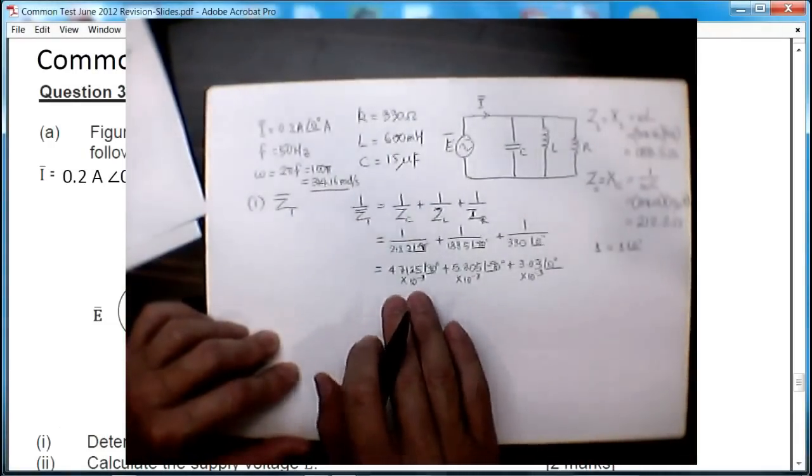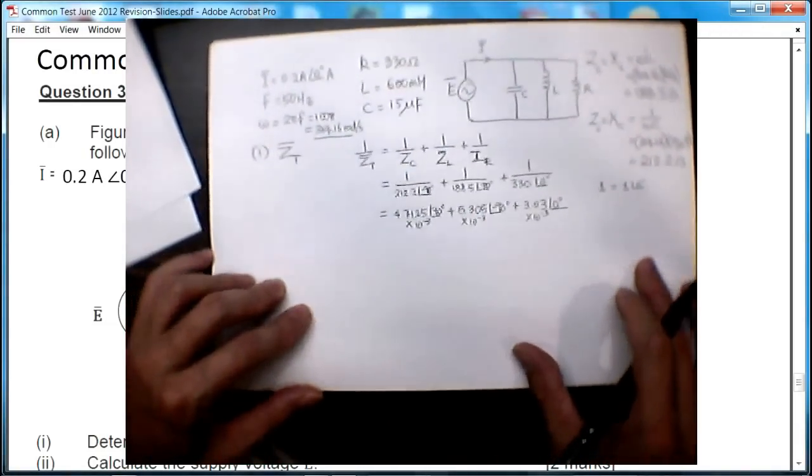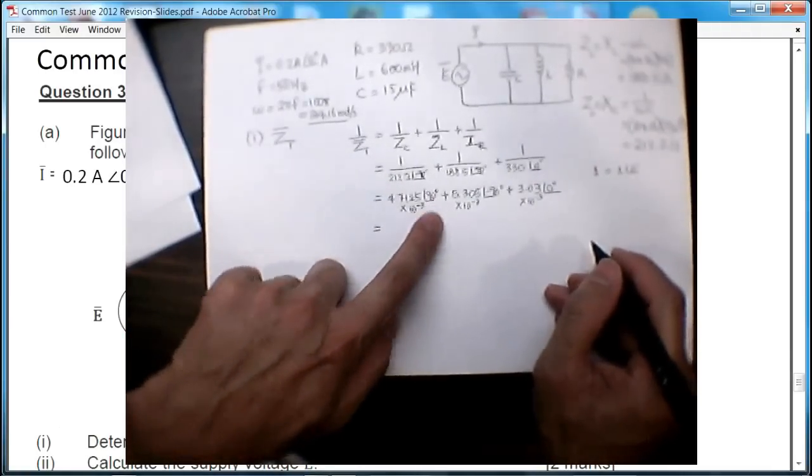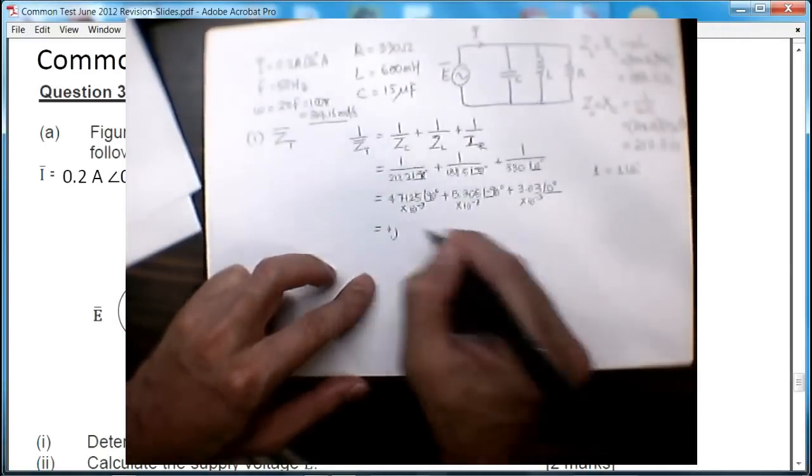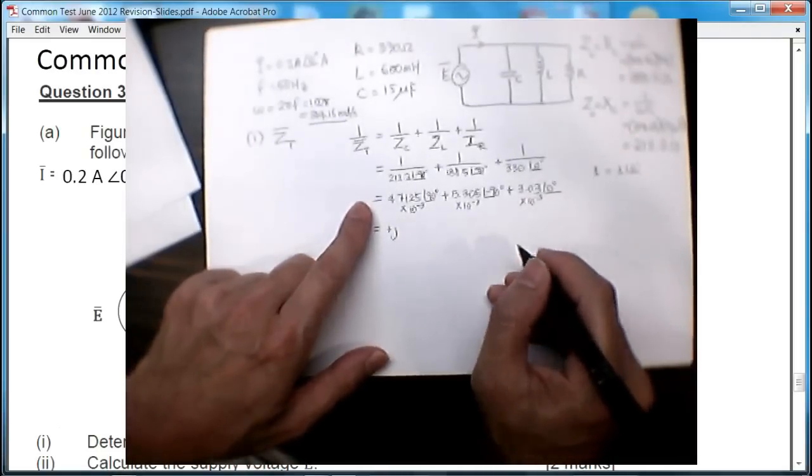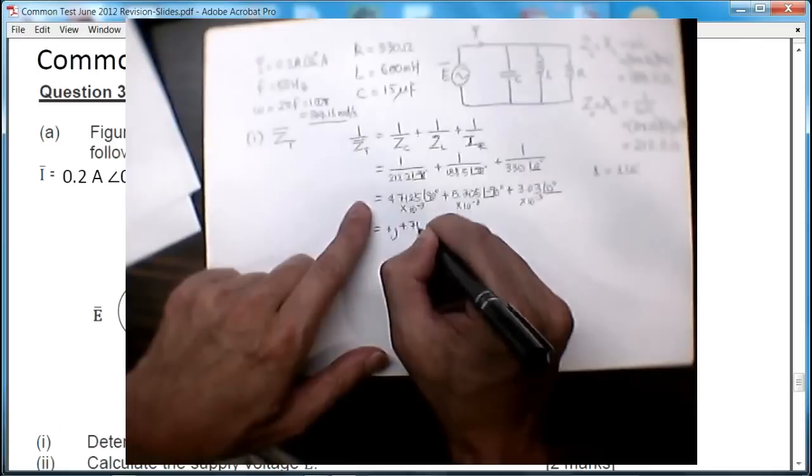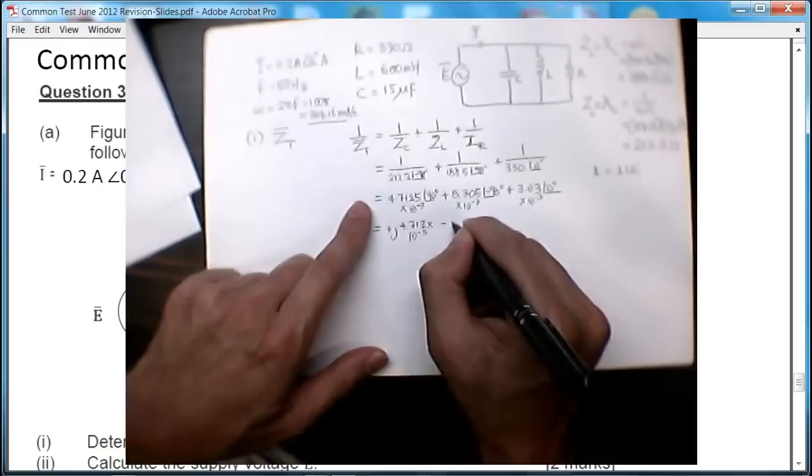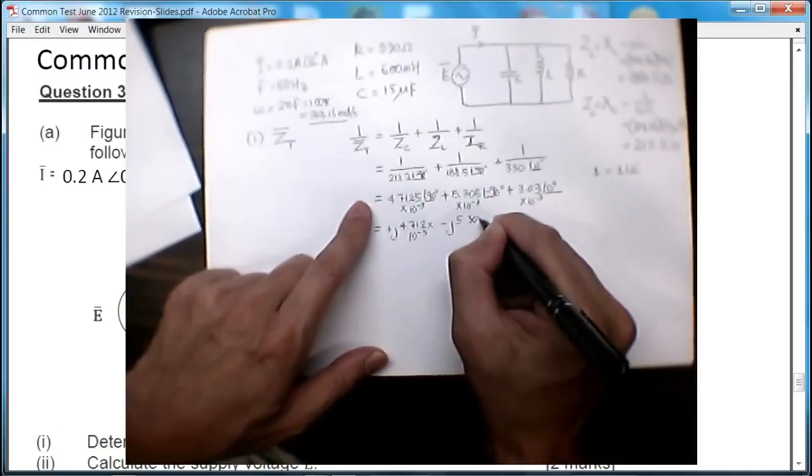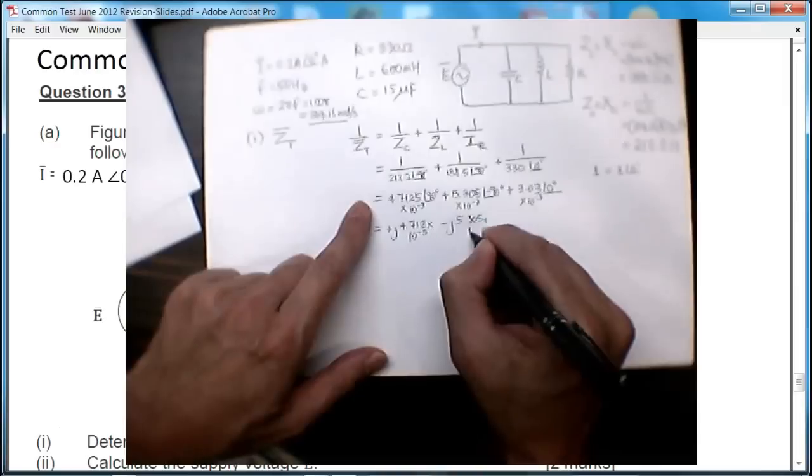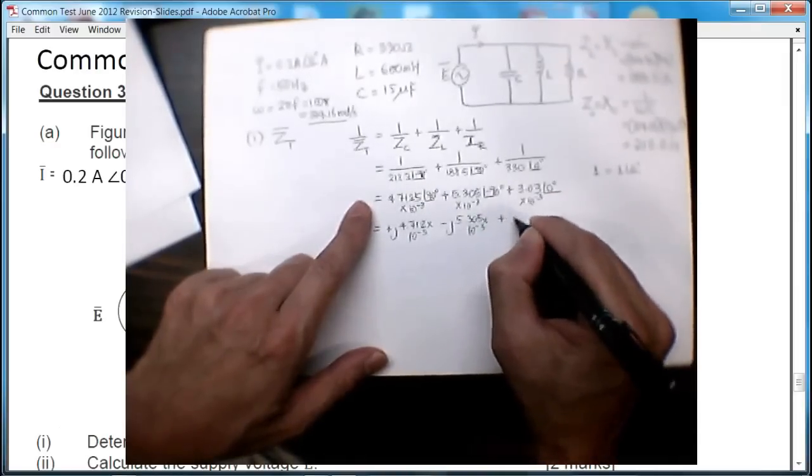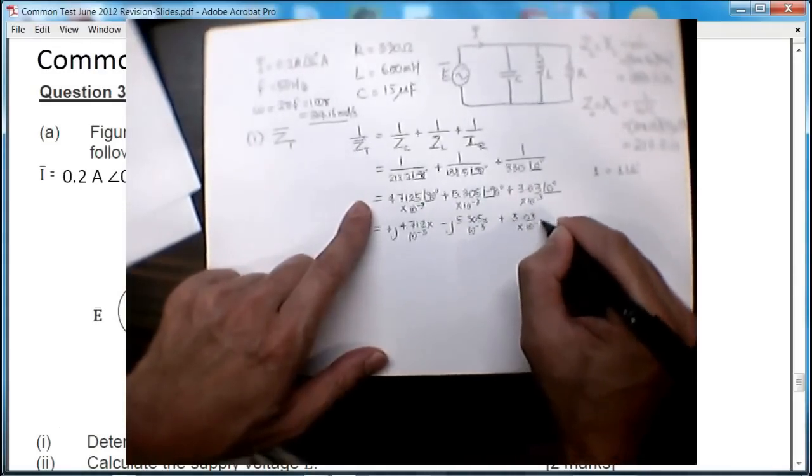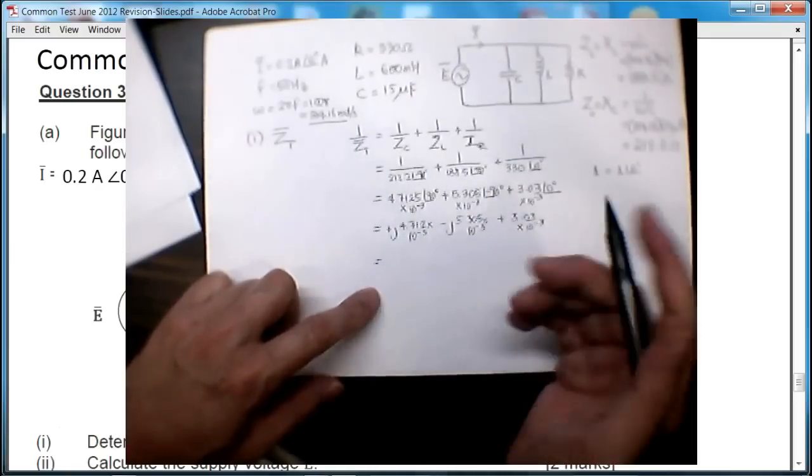Now I need to add complex numbers, so the quickest way for me is to convert them all to rectangular format. For this 90 degrees, I will put plus j symbol in front of this number, so that gives me j 4.712 times 10^-3. Here it's minus 90, so it's minus j 5.305 times 10^-3, plus 3.03 times 10^-3.